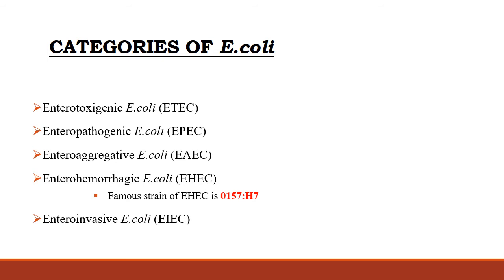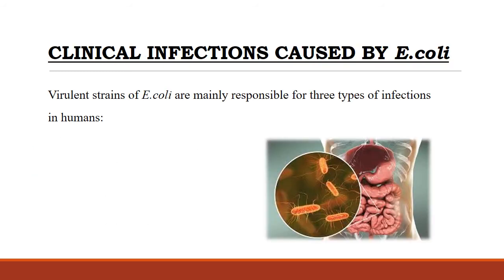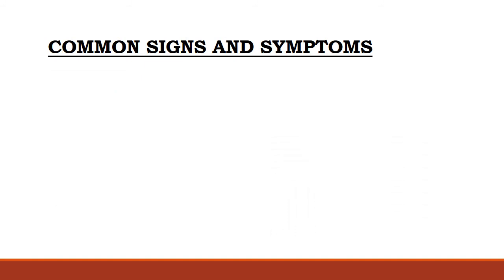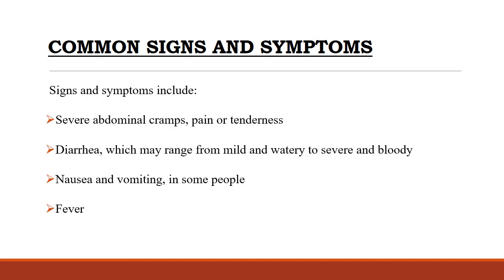E. coli may be the world's most recognized bacterial species, but this one species varies tremendously. E. coli is found almost everywhere, from soil to raw meat to human intestines. There are plenty of good E. coli strains, such as those that assist in food digestion in the human intestines. However, there are also harmful E. coli strains that cause urinary tract infections, neonatal meningitis, and intestinal infections. Symptoms of Shiga toxin-producing E. coli infection often include severe abdominal cramps, pain or tenderness, diarrhea which is often bloody, nausea and vomiting, and in some people, fever.